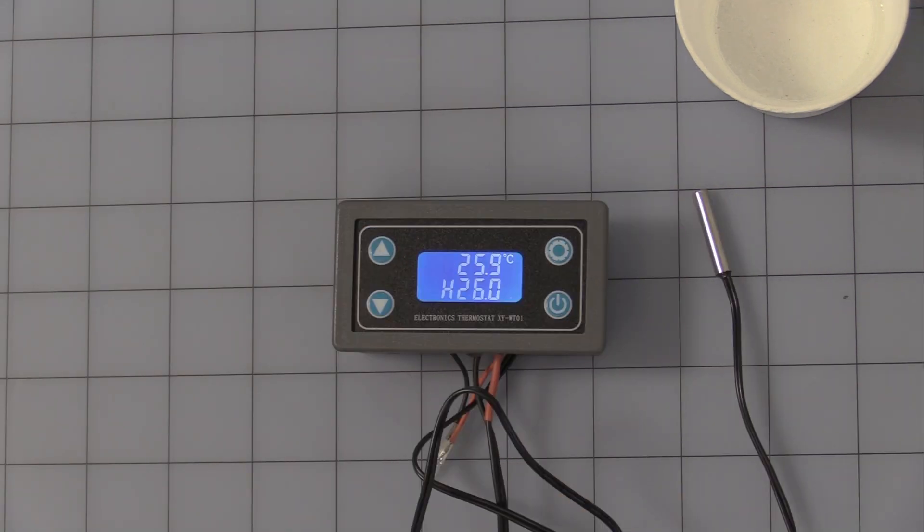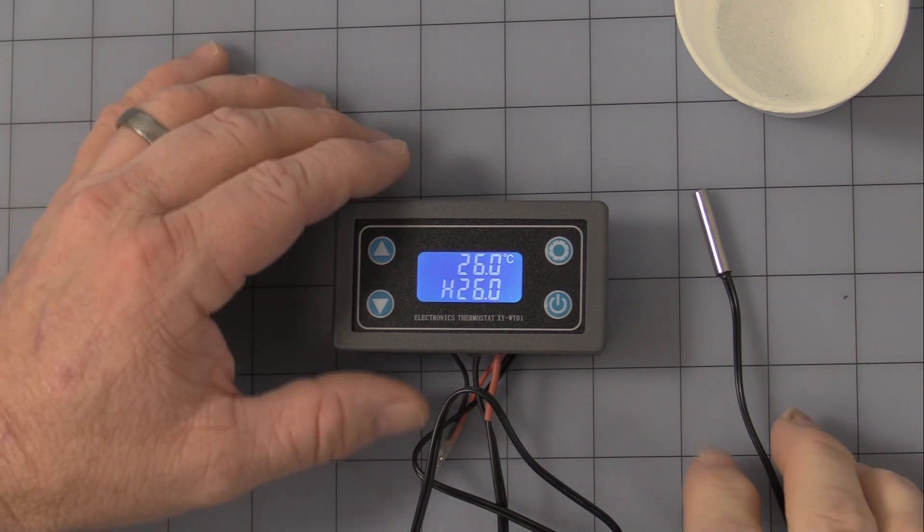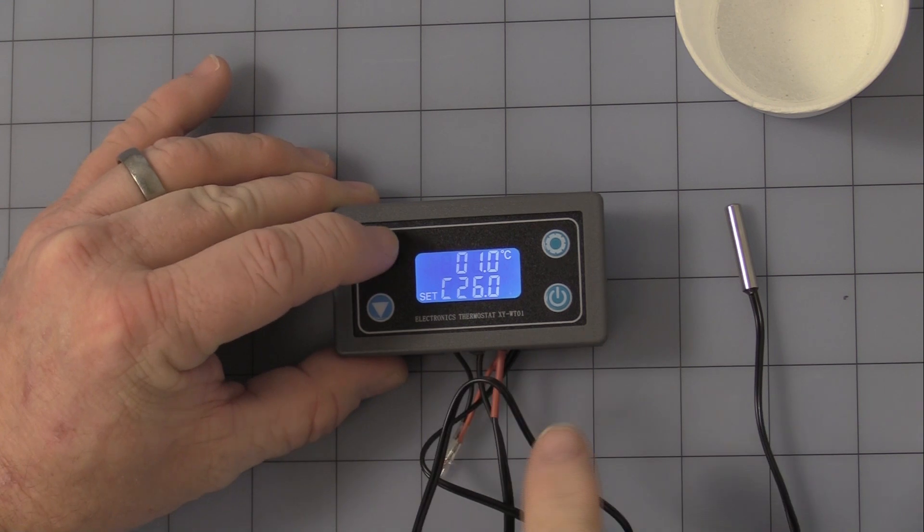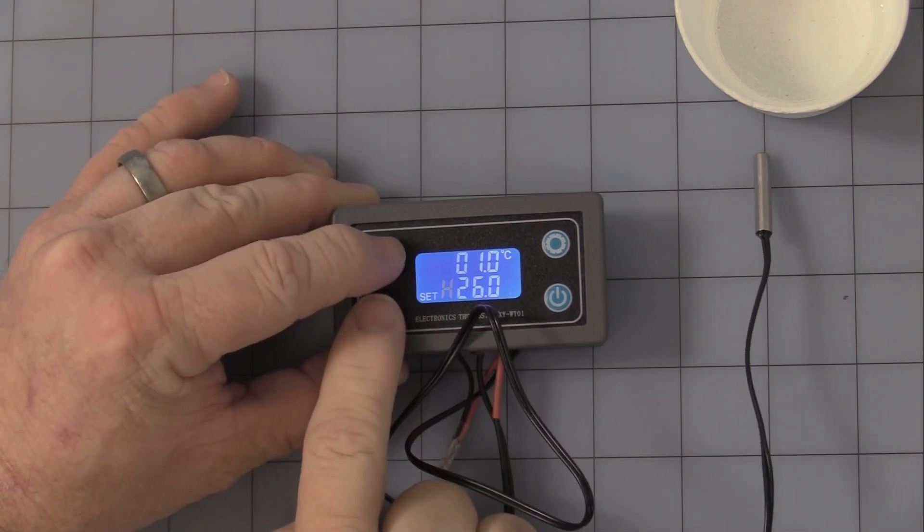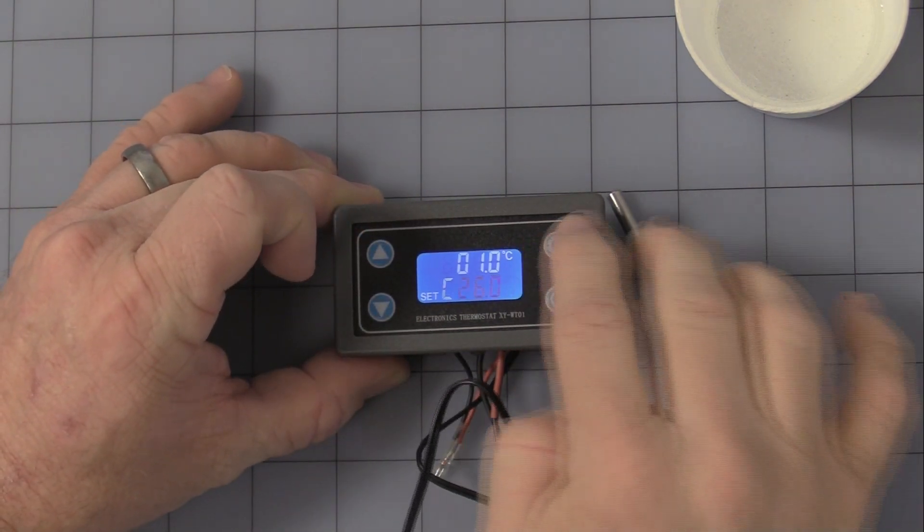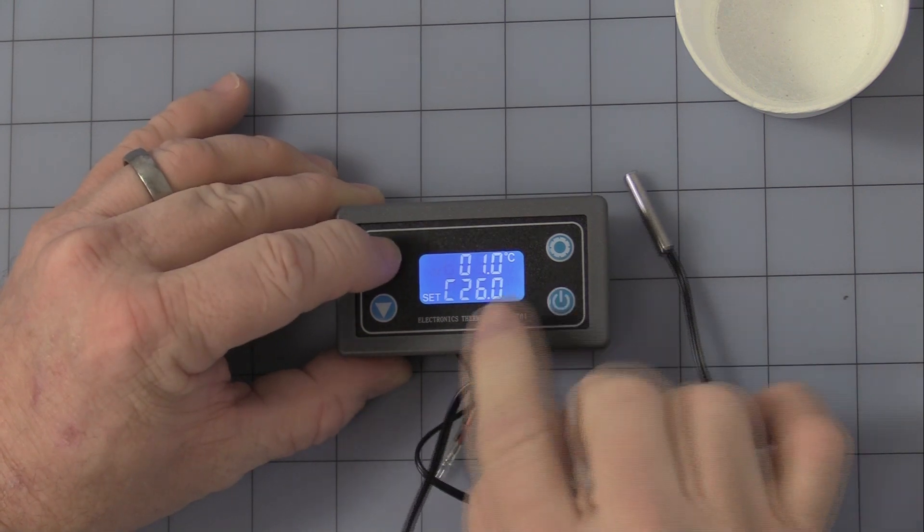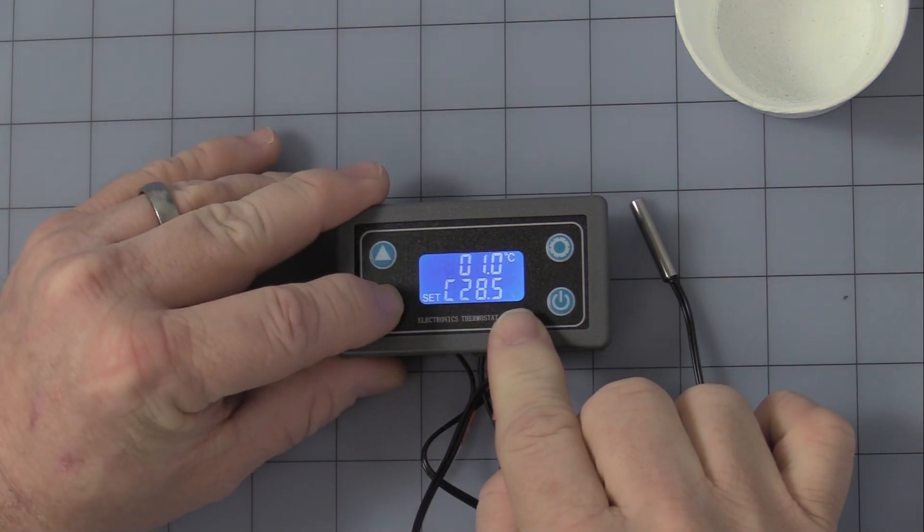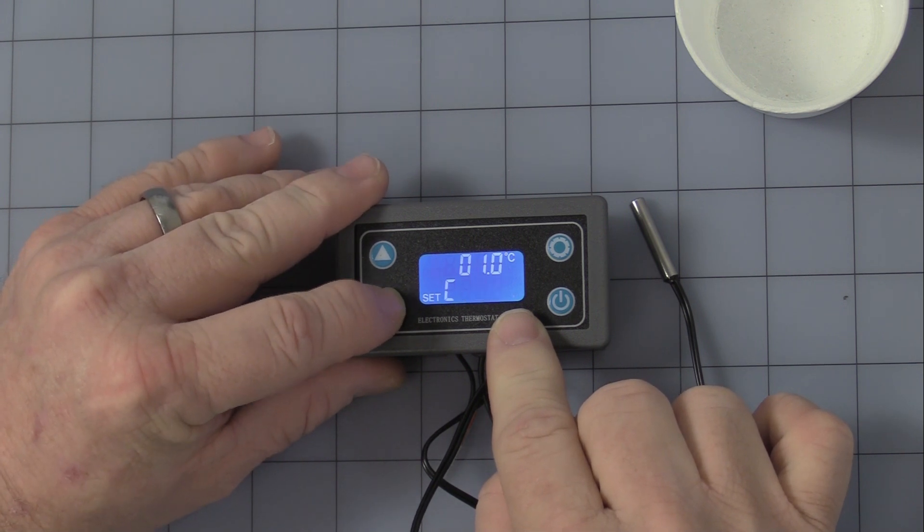Okay, to change it from the heat setting, you press the set button once quickly and H begins to flash. You can use the up arrow and down arrow to change it to the C for cooling. You press it again and it'll change to the set point. Use the up down arrows to set whatever temperature you want for cooling. I like 26, it seems to work well.